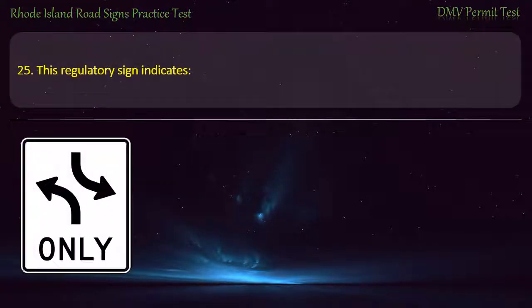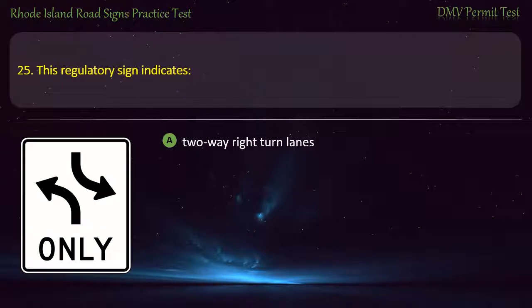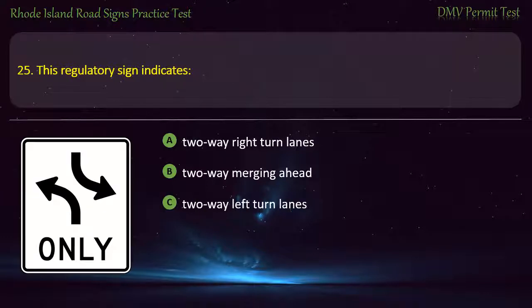Question 25. This regulatory sign indicates: two-way right-turn lanes, two-way merging ahead, two-way road ahead, two-way left-turn lanes. Answer: Two-way left-turn lanes.